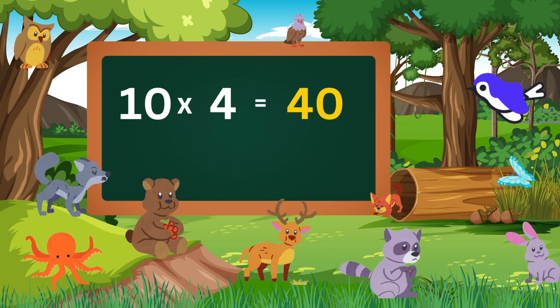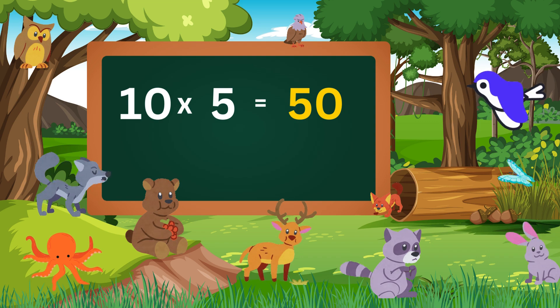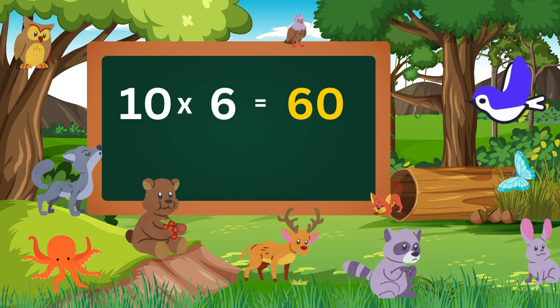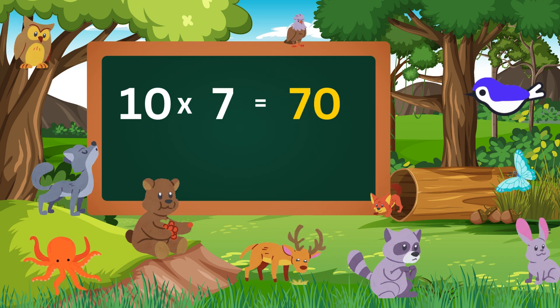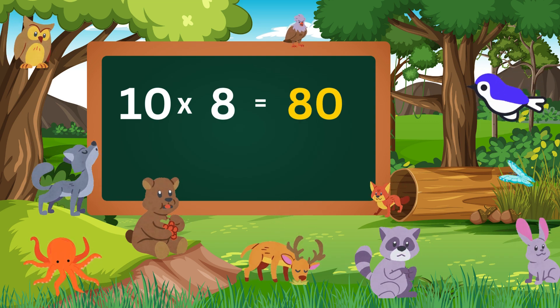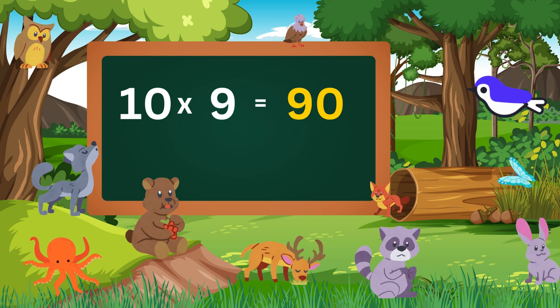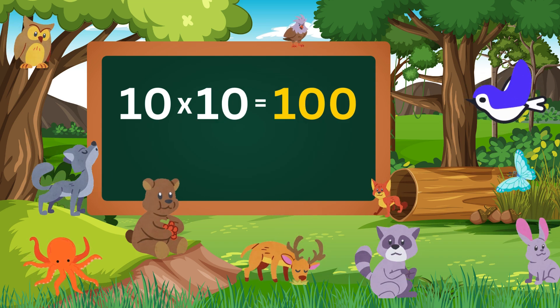Table of ten. Ten fives are fifty-five. Ten sixes are sixty-six. Ten sevens are seventy-eight. Ten eights are eighty. Ten nines are ninety. Ten tens are one hundred.